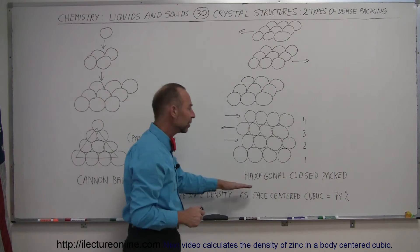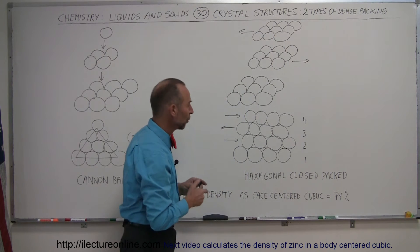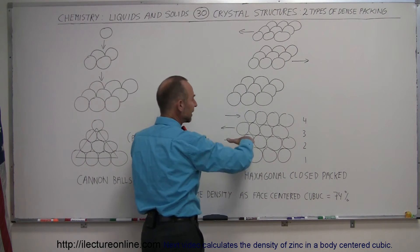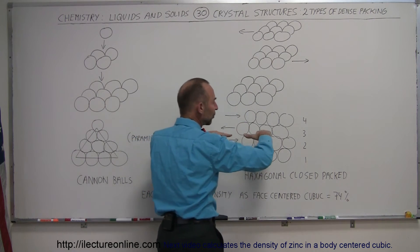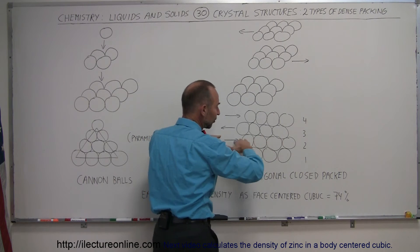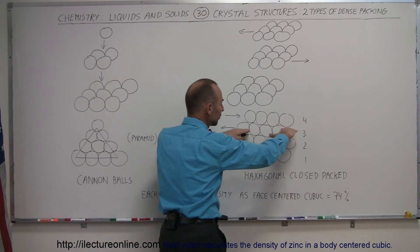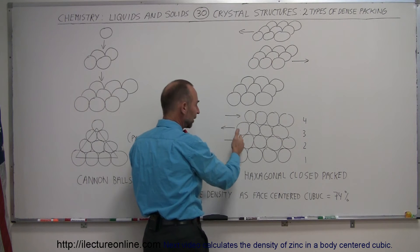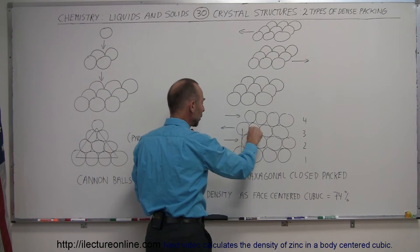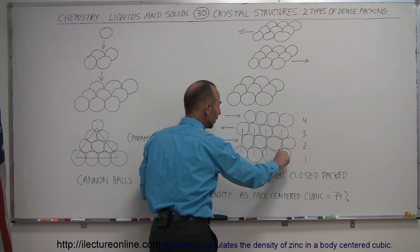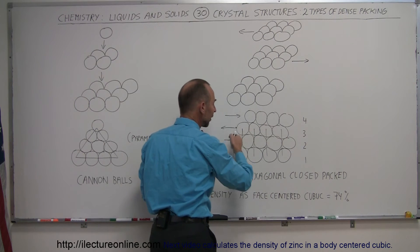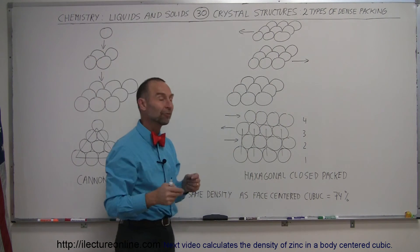We can also have what we call hexagonal closed packing arrangement, where we have your bottom layer, and then you take the second layer and move it somewhat to the right, kind of where the depressions are. Then you take the third layer and move it back to the left in such a way that the third layer is perfectly aligned in every way with the first layer, like so, that the atoms of the third layer are exactly above the atoms of the first layer.